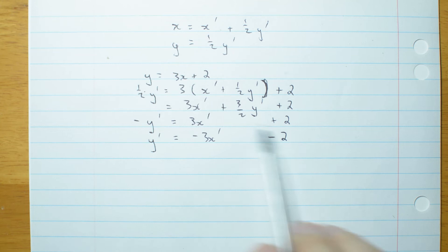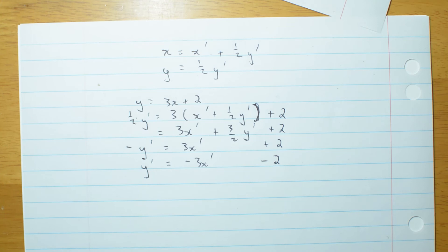So now I have an equation for the image of this line. This is the image of that line under the same transformation that turned this square into the parallelogram.